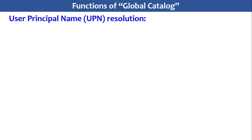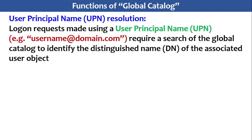One of the functions is user principal name resolution, or UPN resolution. Logon requests made using UPN — for example, sometimes we log on using username@domain.com — require a search of the Global Catalog to identify the distinguished name (DN) of the associated user object. So in this case, we require the Global Catalog.